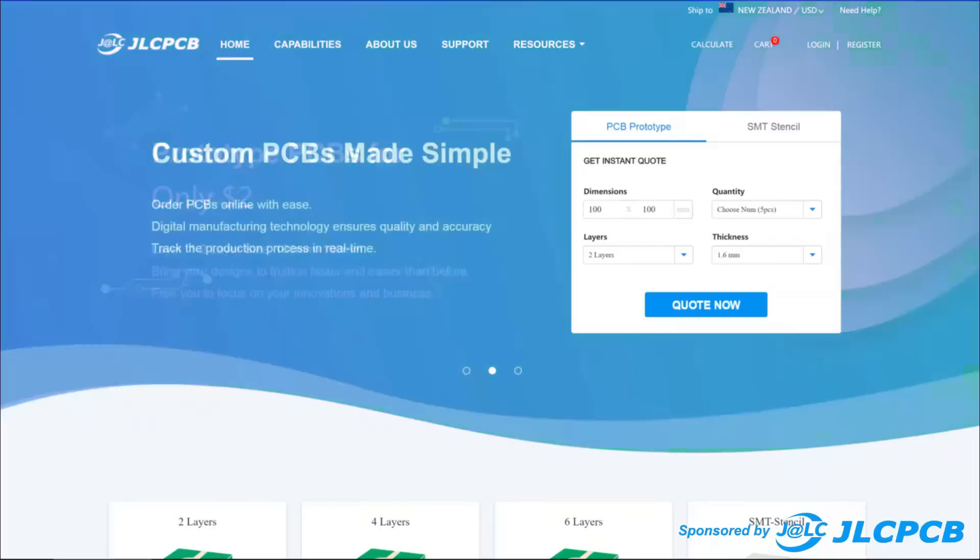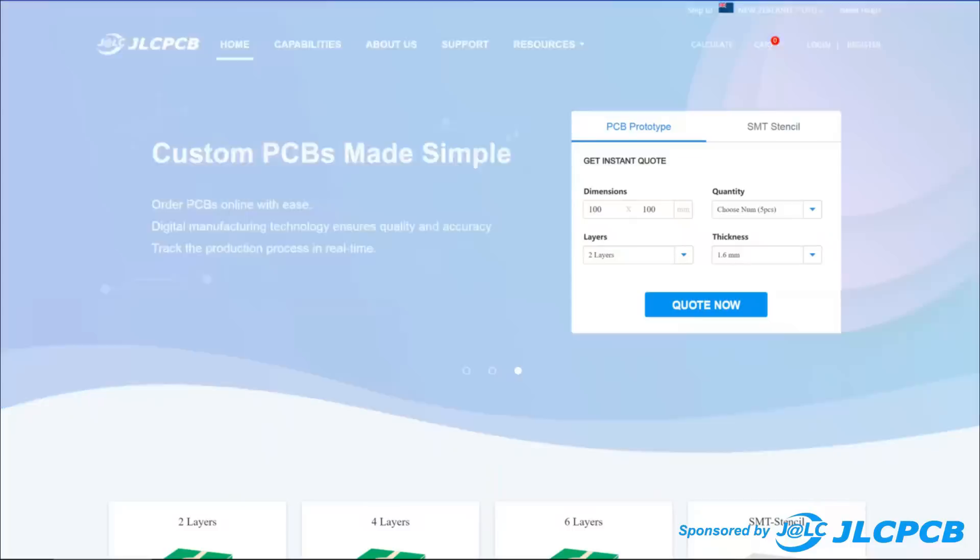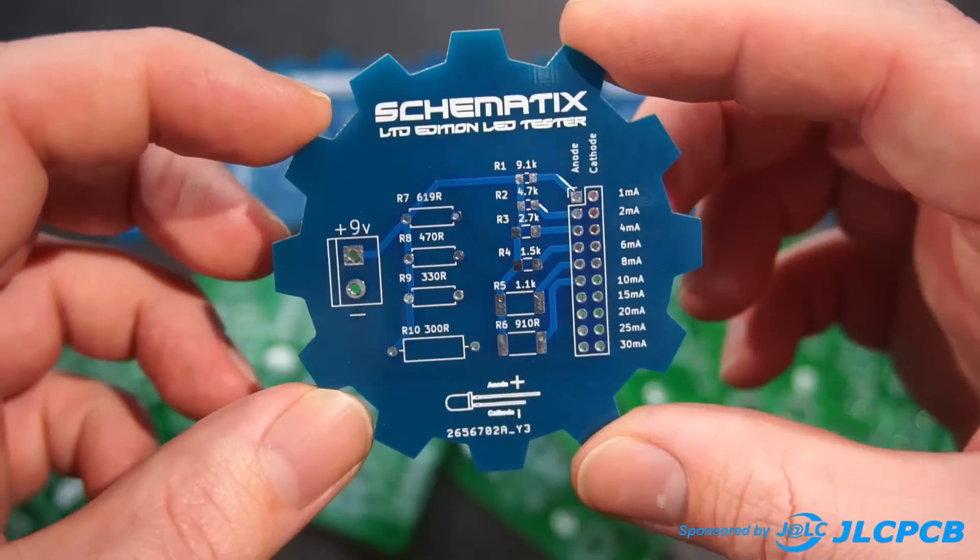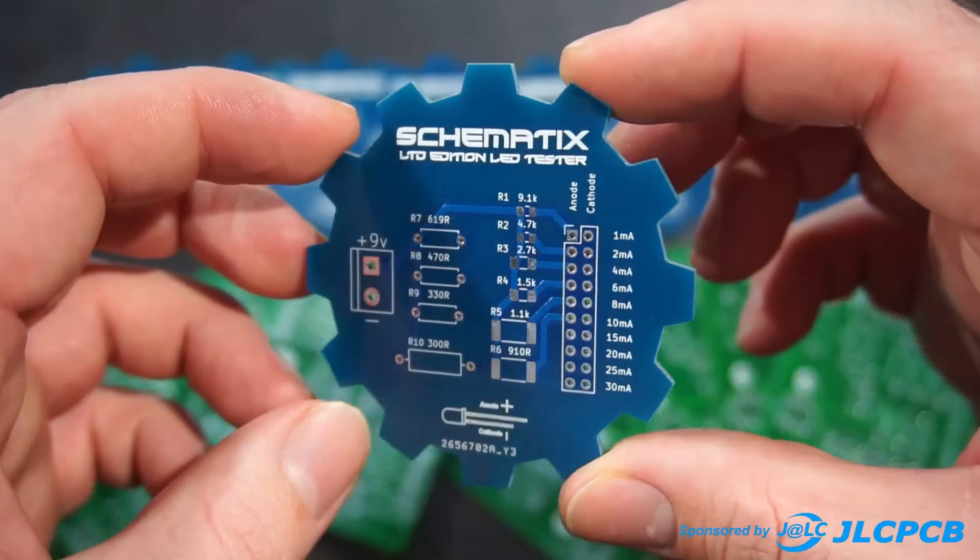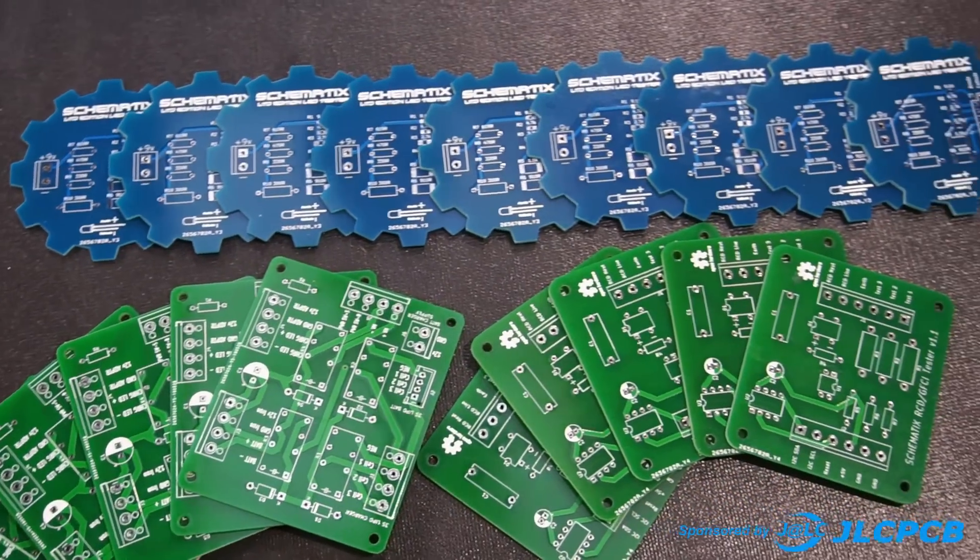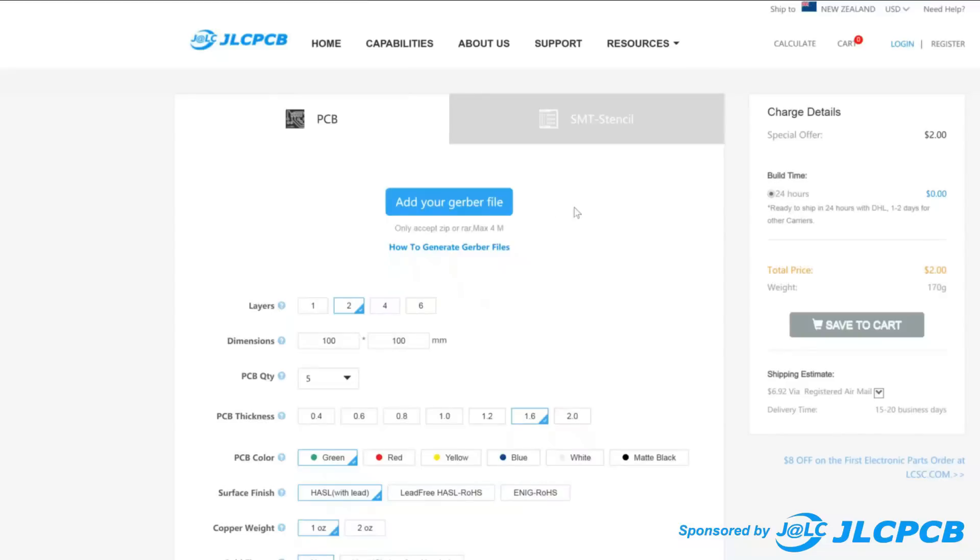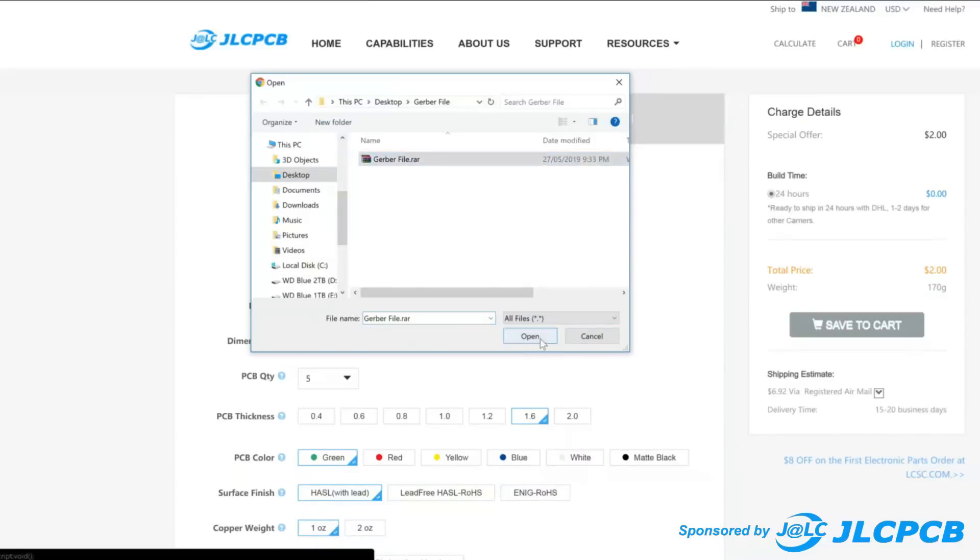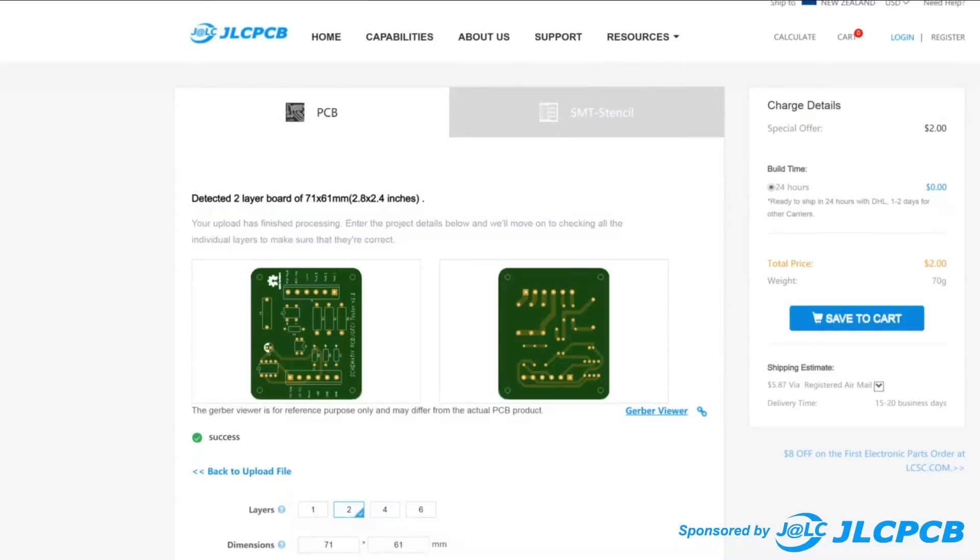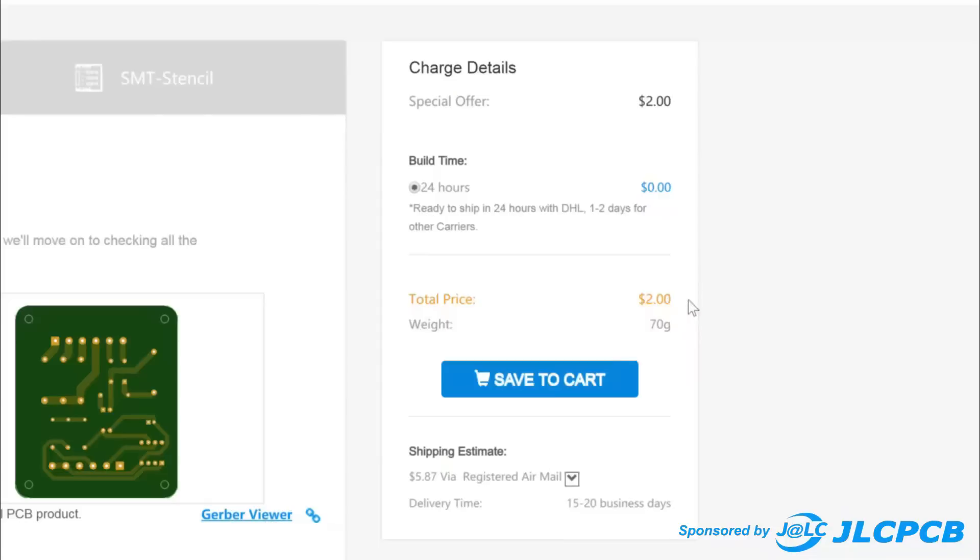This video is proudly sponsored by JLCPCB, who offer high quality PCBs at very affordable prices. They offer fast production time as quick as 24 hours from ordering to your order being shipped worldwide, and ordering is as simple as uploading your Gerber file and choosing your design preferences. Order 5 PCBs from as little as $2.